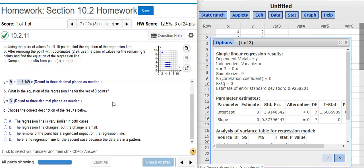And now part C is the last part of the problem. And it asks us to choose the correct description of the results below. We've got four options here. So let's look at them one at a time.